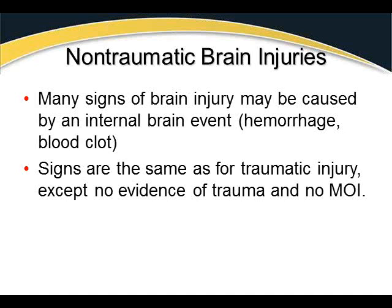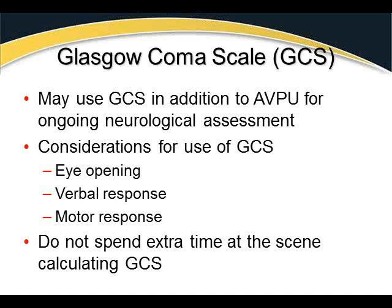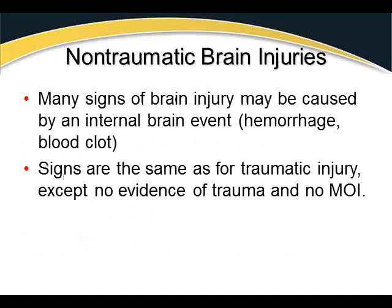Occasionally we also have non-traumatic brain injuries. Many signs of brain injury can be caused by an internal event such as a hemorrhage, blood clot, aneurysm, or stroke. They'll look exactly the same as traumatic injuries — the only difference is there's no evidence of trauma and no mechanism of injury. Typically the patient just wakes up with a headache, and going back through their history, they can't identify any recent falls, accidents, or assaults. In most cases, we refer to that as a stroke.